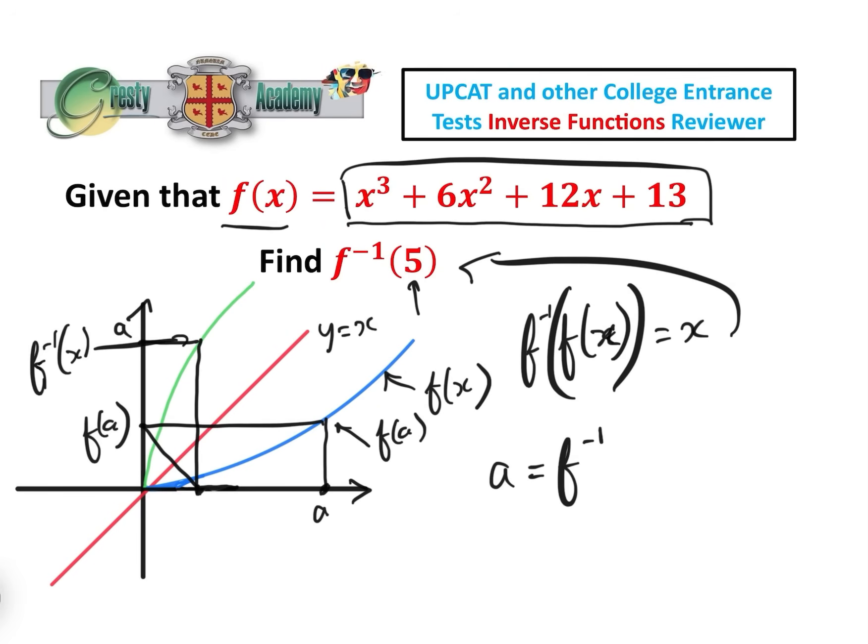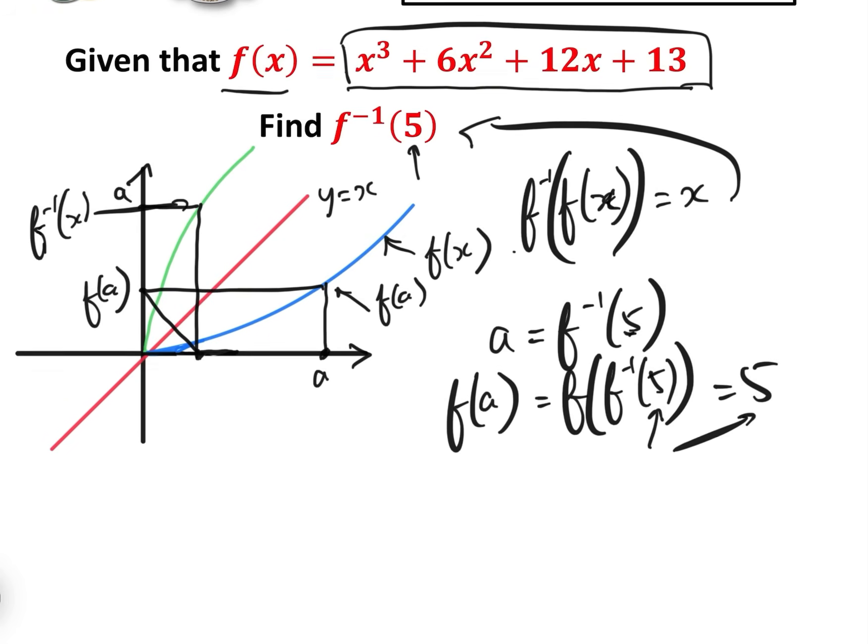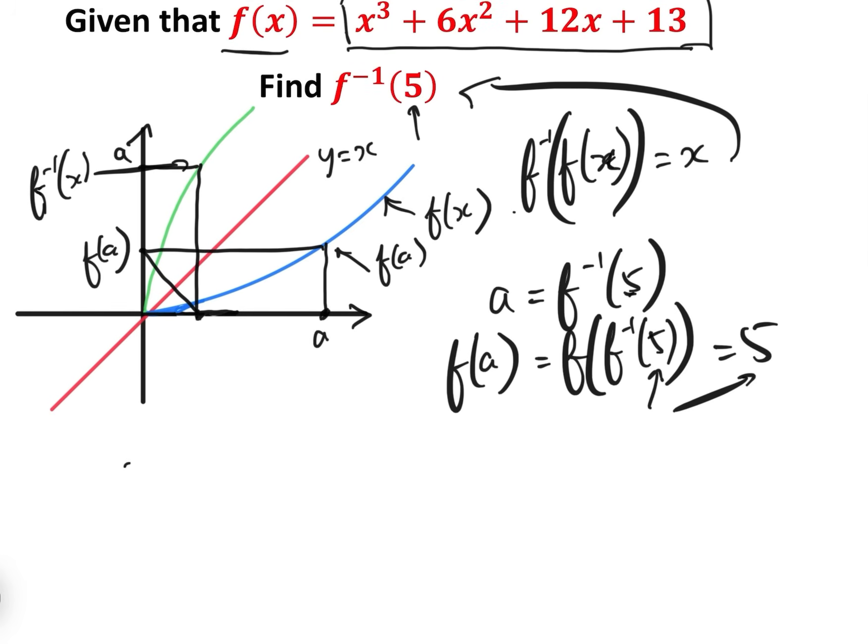Well, let's let, for example, a equal f inverse of 5, which is what we want to find. So therefore, f(a) equals f of f inverse of 5, and we've just established that f of f inverse of 5 is the same thing as f inverse of f of 5, it doesn't matter whether we go forwards and backwards or backwards and forwards, that equals 5, we get right back where we started. So therefore we know that f(a) equals 5, remembering that a is what we want to find.